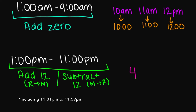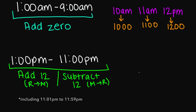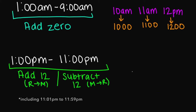Let's say we had 4 p.m. regular time. To change to military time, I'm going to add 12 — this is going to be 1600. What about 7 p.m.? Add 12 — this is going to be 1900 hours. What about 10 p.m.? Add 12 — this is going to be 2200 hours.